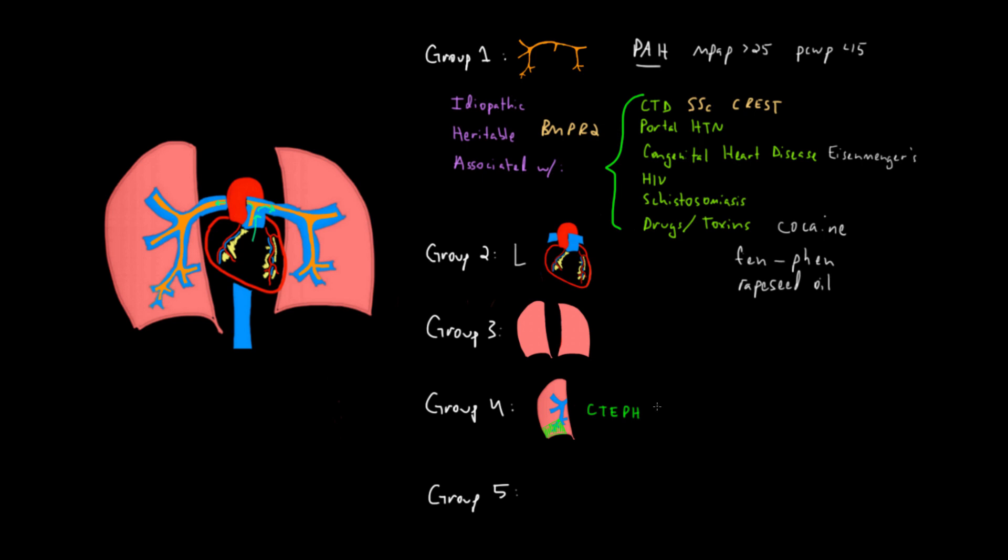The last category, group five, is kind of a grab bag of everything else. Causes of pulmonary hypertension that don't neatly fit into groups one through four get put in here into group five. This can include things like hematologic disorders including certain myeloproliferative conditions, systemic diseases like sarcoidosis, and metabolic diseases like glycogen storage diseases.